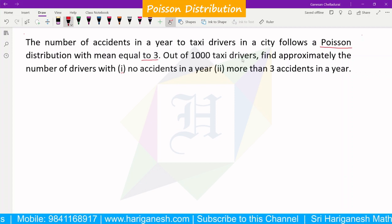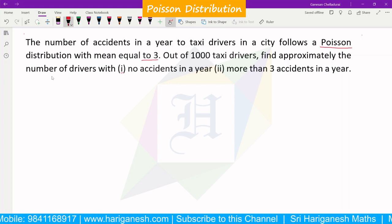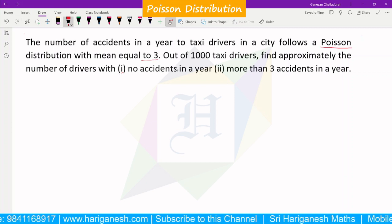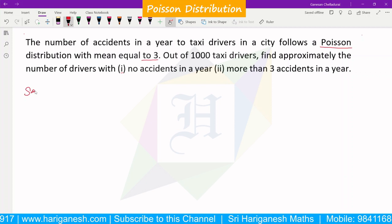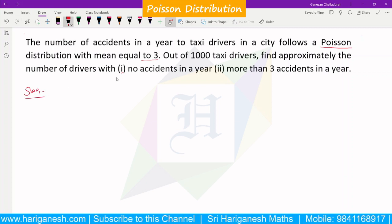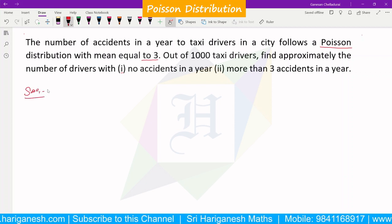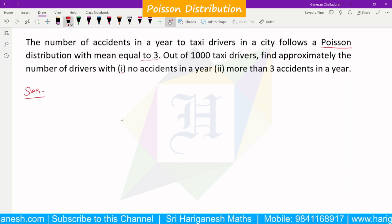Out of 1000 drivers, find approximately the number of drivers with (i) no accidents in a year, (ii) more than 3 accidents in a year. So random variable x is the number of accidents in a year. So first, Poisson distribution PMF.